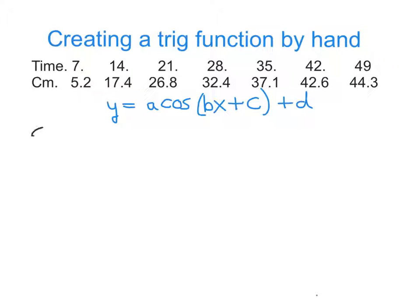There's formulas for each of these variables. A is the amplitude, which is half of the range. And the formula for that would be half the max, the maximum Y value minus the minimum.